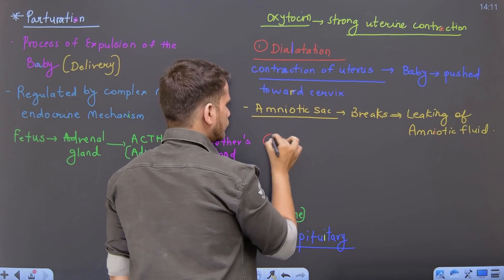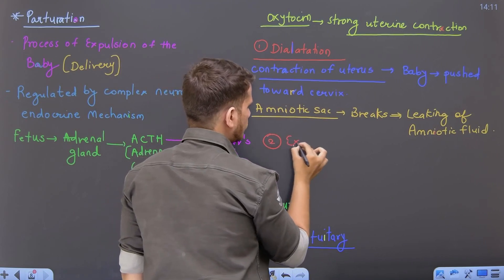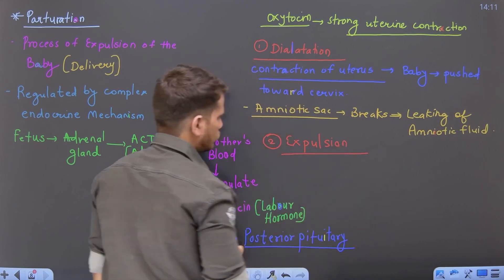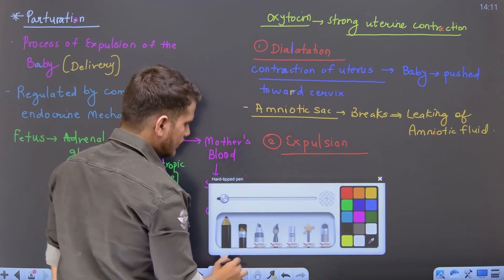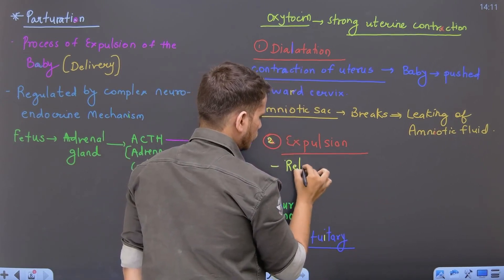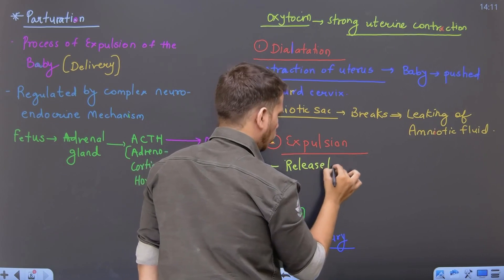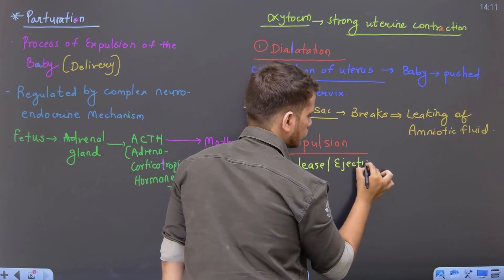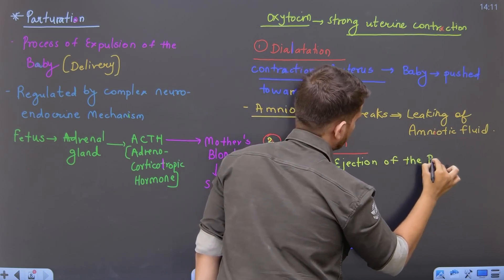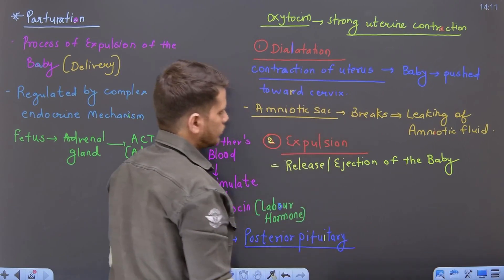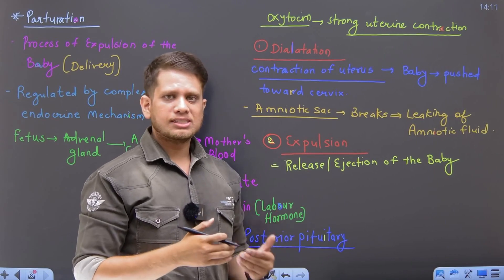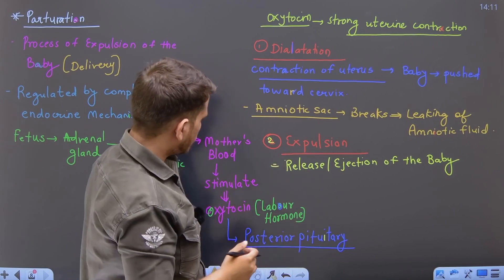Second stage is nothing but expulsion. Expulsion mein there will be release or ejection of the baby — under the influence of the hormone oxytocin, baby is pushed out of the uterus. Uterus se jaise baby bahar aajayega, this process is nothing but expulsion.